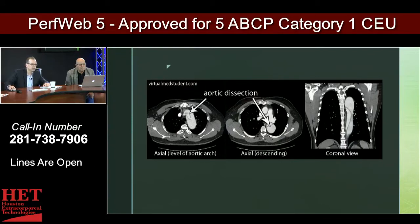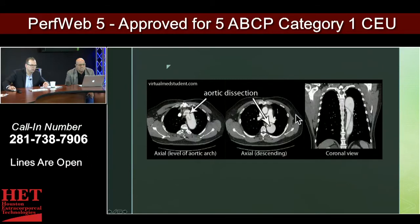This is a different view. You have axial views, sagittal views which go side to side left to right, and then coronal views which cut the body from front to back. This shows the true lumen and then the false lumen of this same dissection. What's neat about this picture is you can see the intimal flap within the arch of the aorta.